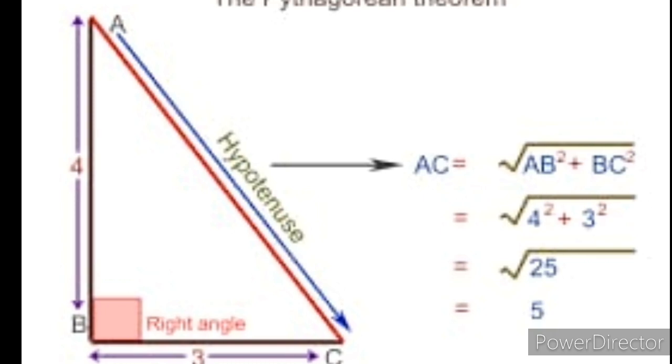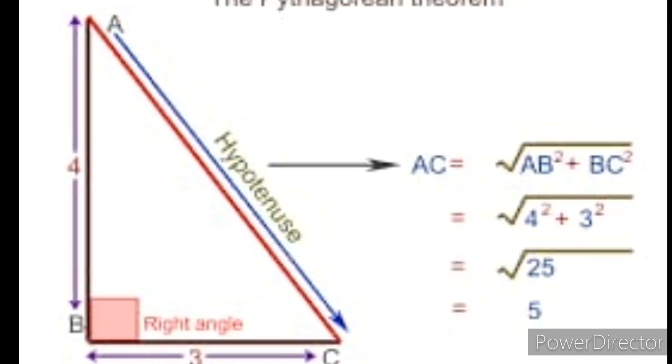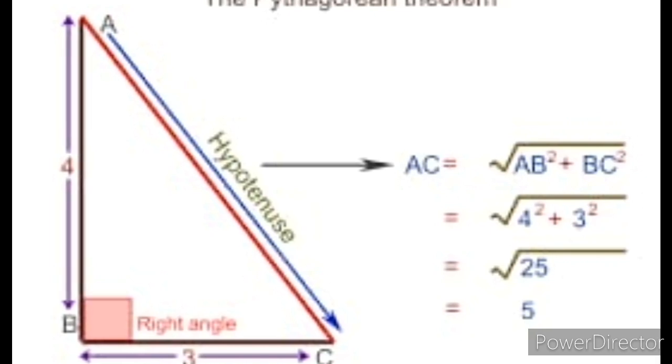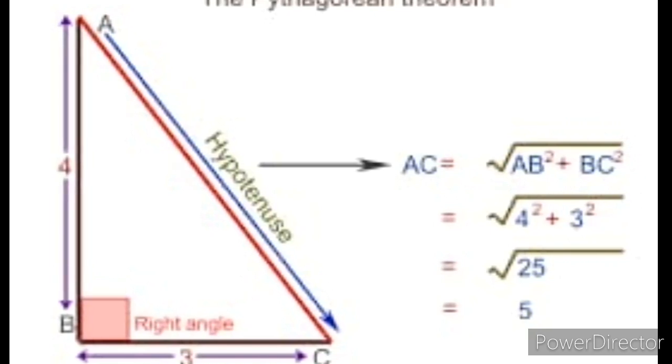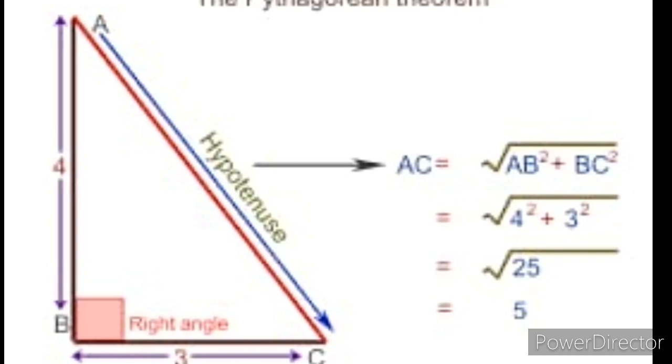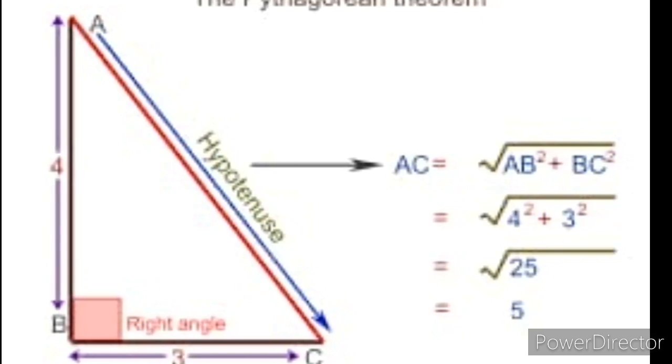Let us check. In the figure, AC is hypotenuse, AB and BC are the other two sides. So, AC is equal to the square root of 4 squared plus 3 squared, which equals 5.